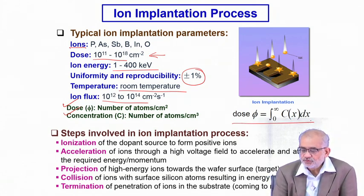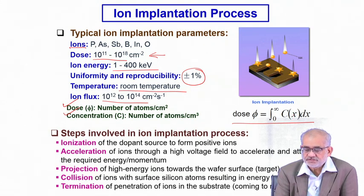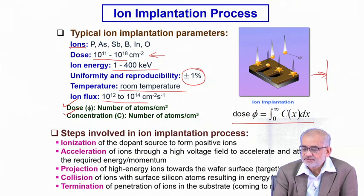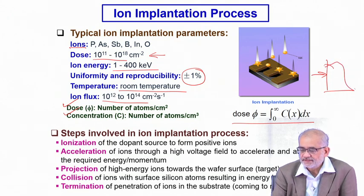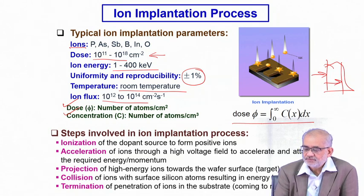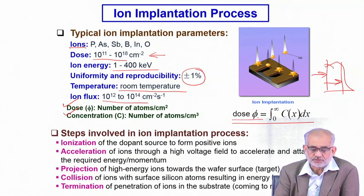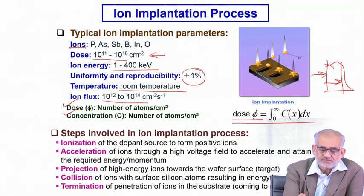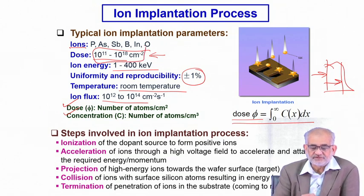Typically the dose is the integration of the particular species concentration over a period of time. If this is the surface into which you are implanting and this is the distance, the typical profile would show the depth, and you integrate over the entire thickness of the material — the total value gives you the total dosage achievable, which would be somewhere in the range of 10 raised to 11 to 10 raised to 18.